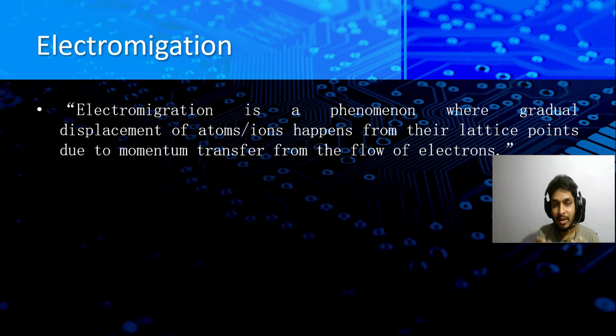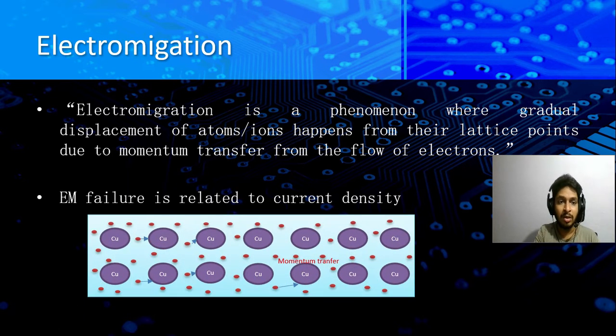How does it happen? Before that, we need to understand that electromigration mainly happens because of current density. Higher the current density, more the problem of electromigration. So if there is a thin wire which conducts a lot of current, then it will definitely eventually have this electromigration issue. One thing we need to remember is electromigration happens gradually. It does not happen all of a sudden or in one day or something, it takes years. The atoms or ions will move from their position. So if you see this picture that I have drawn...